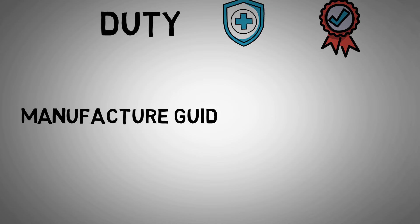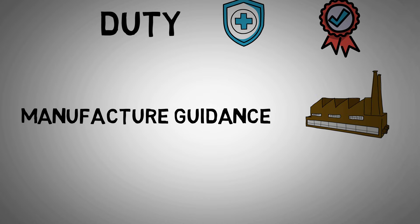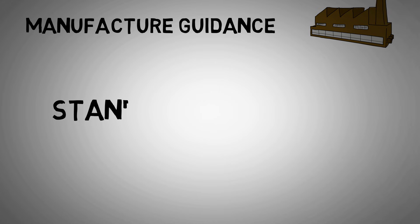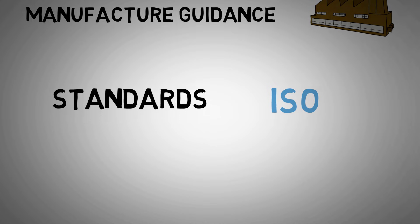Manufacturer guidance: calibration frequency can also be dependent on the transmitter type, and the manufacturer will provide a recommended calibration period in its literature. Standards: if, as part of your manufacturing process, you are accredited to ISO or other standards, then equipment calibration frequency is highly controlled and it will determine the frequency.